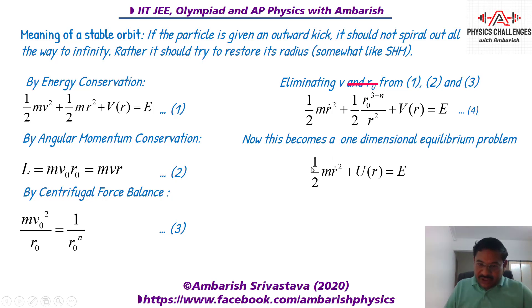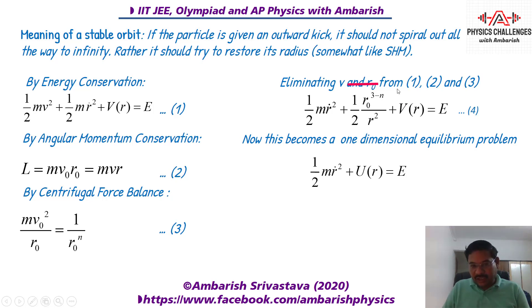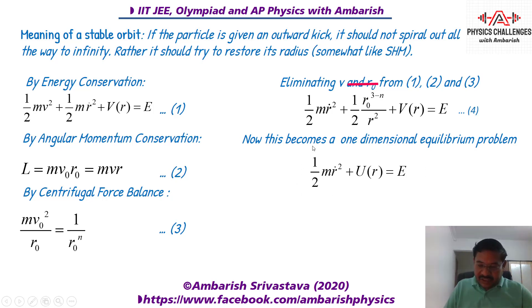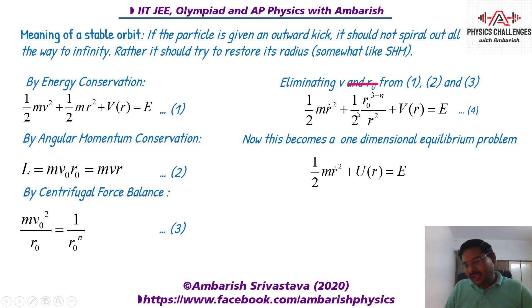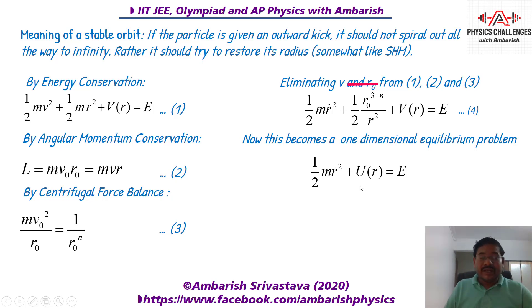We write this as: half m·ṙ² + U(r) = E, where U(r) combines V(r) and the angular momentum centrifugal term. This looks just like a one-dimensional problem — there are no theta terms, no tangential velocity terms. It's just like a spring-mass system writing half mv² + half kx² = constant, except U(r) is some other function rather than half kr². It's simply an energy conservation equation for a one-dimensional problem. For stable equilibrium, we need a minimum of potential energy — the second derivative must be positive.